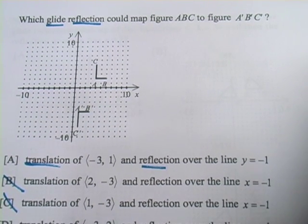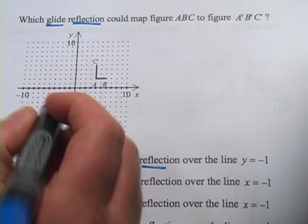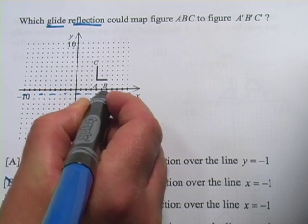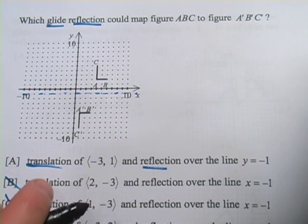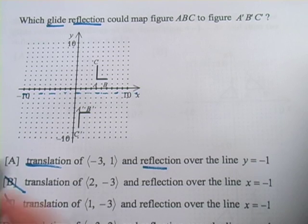And then the next thing you should be thinking about is that if I'm going to flip it over the line y equals negative one, and actually let's just draw that in right now as a dashed line. There's the line y equals negative one. If I'm going to reflect it over that line.